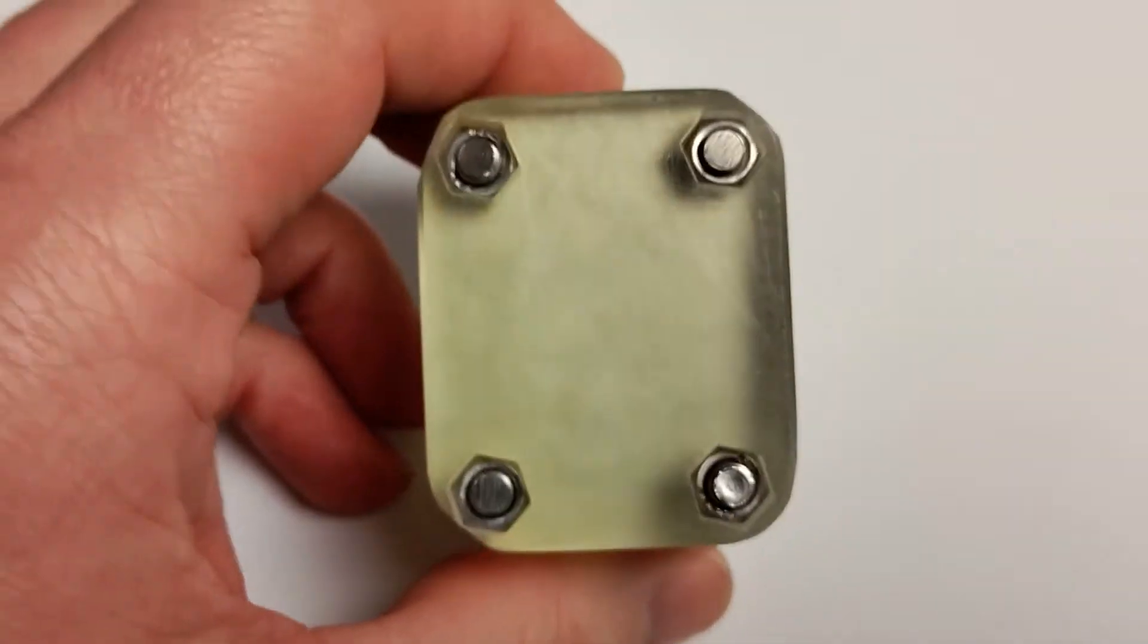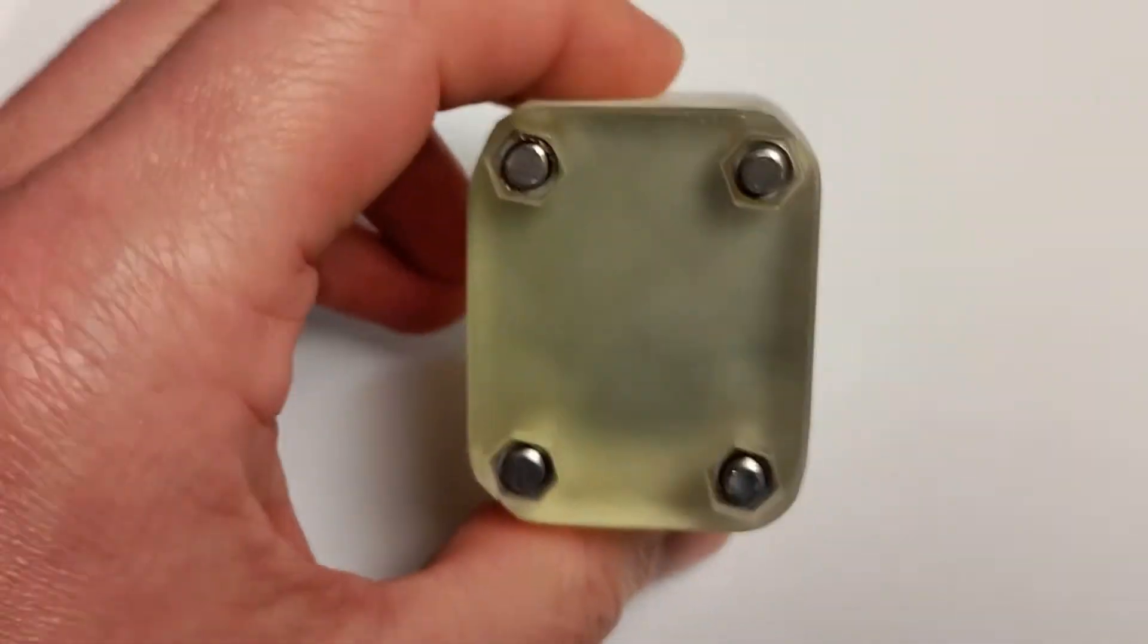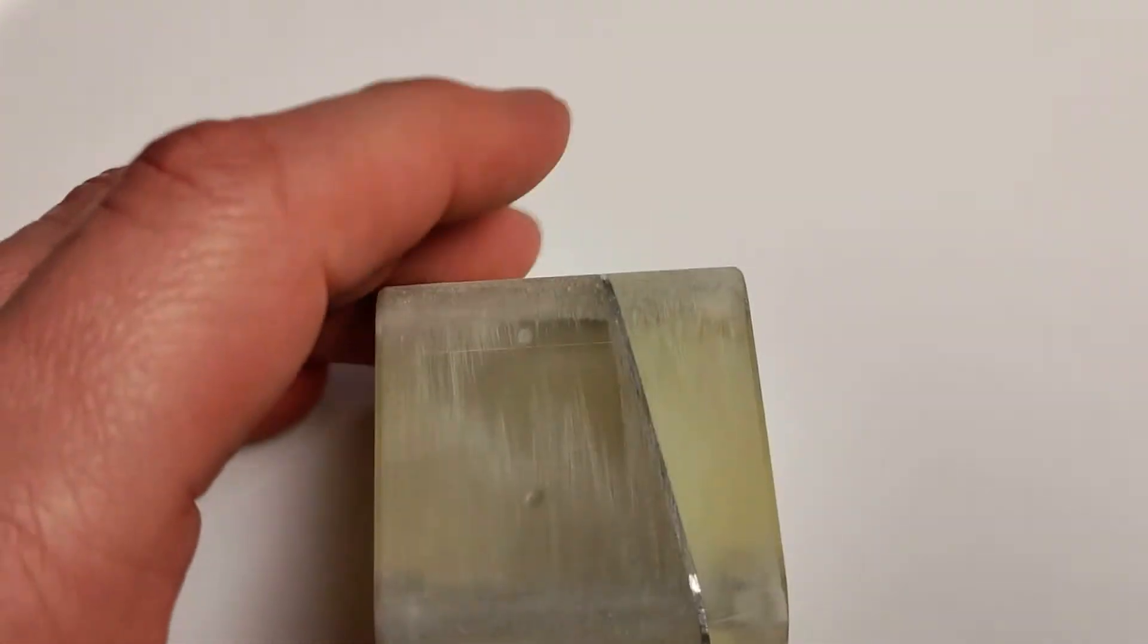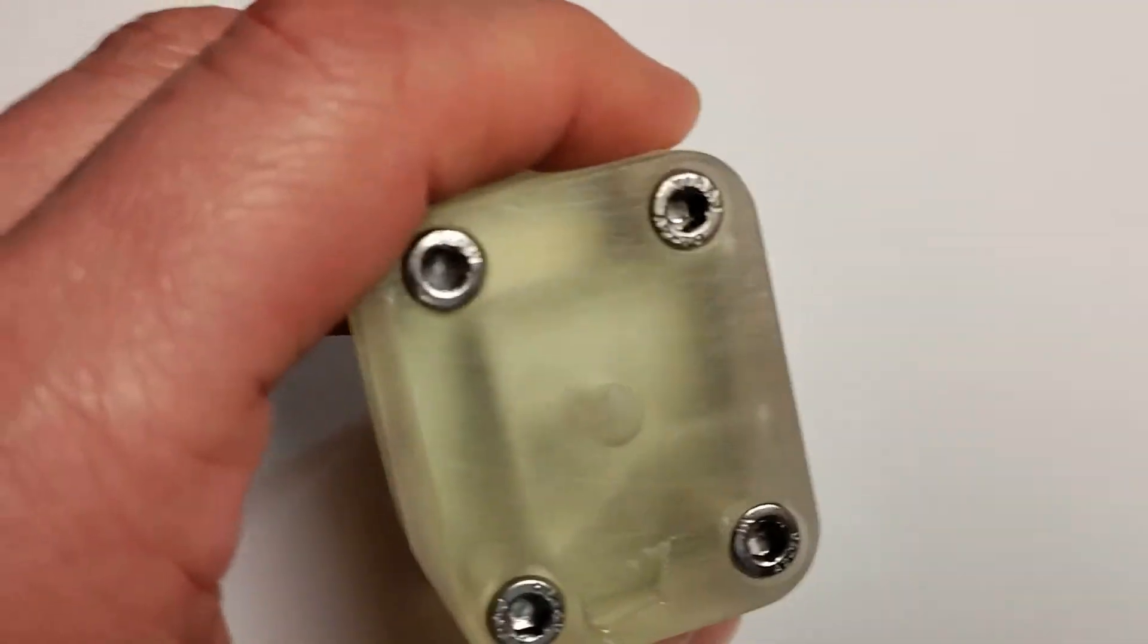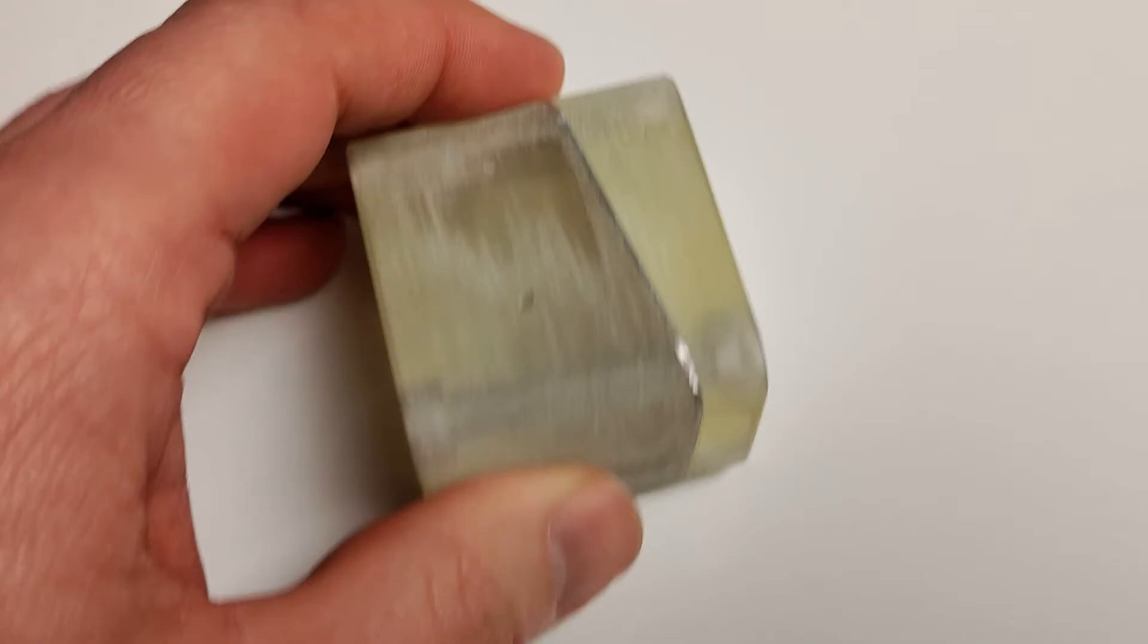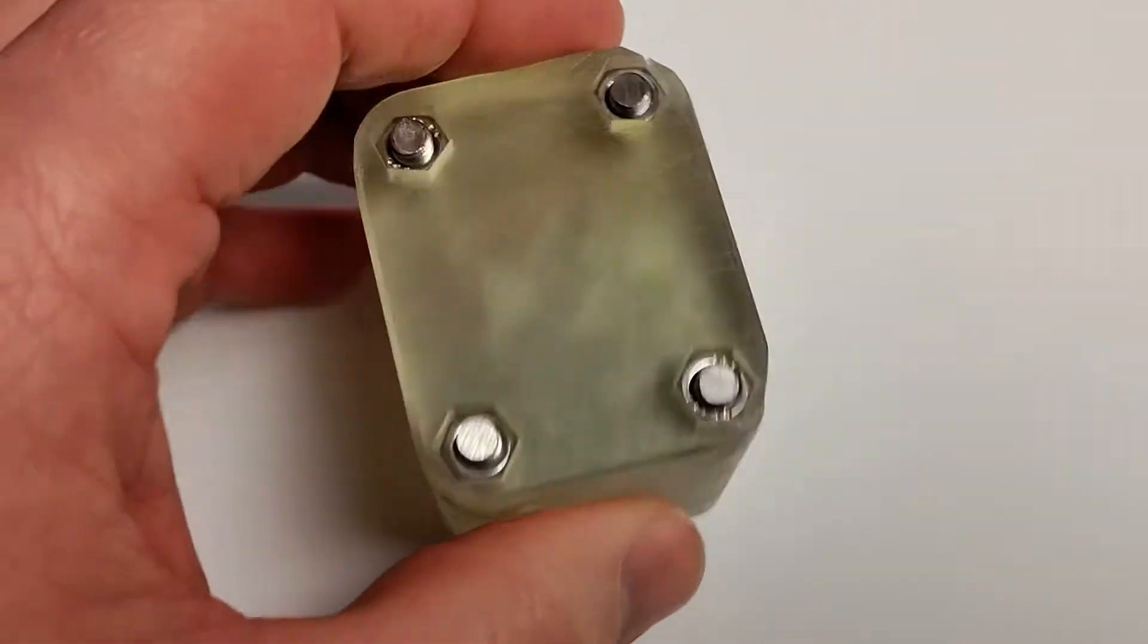That's usually a challenge when you talk about additive because we do tend to build up things in layers, but by clever use of metal plates, we can get to a situation where what the material sees looks remarkably like a conventional injection molded tool.